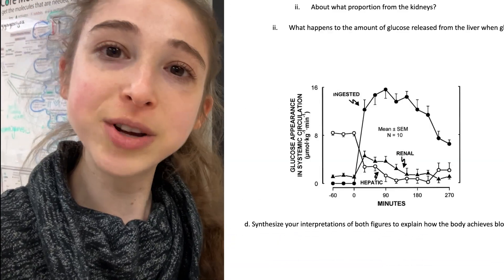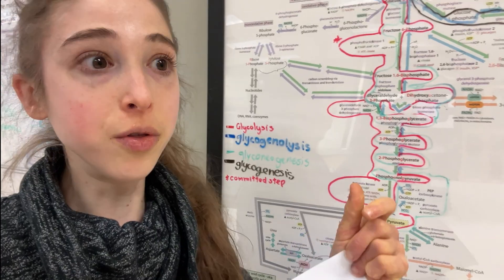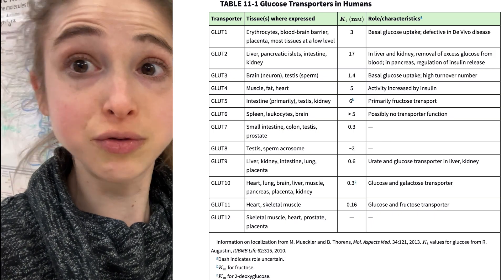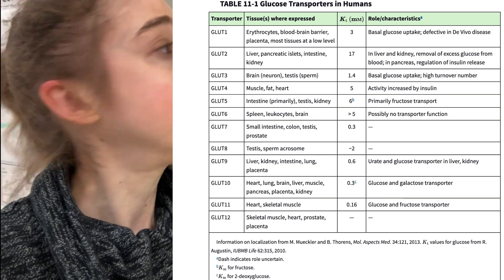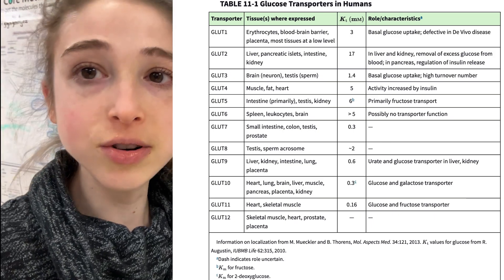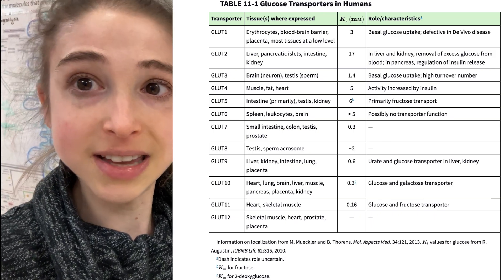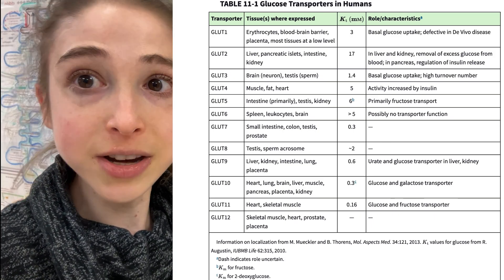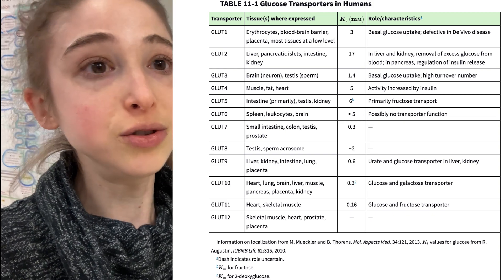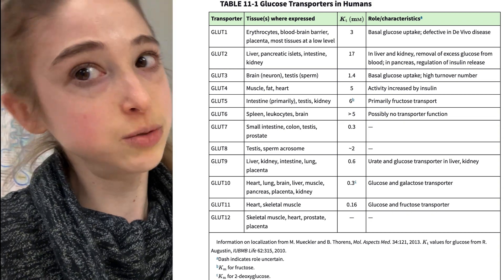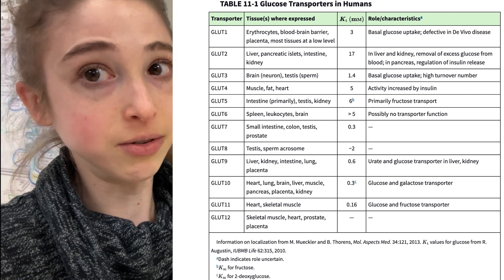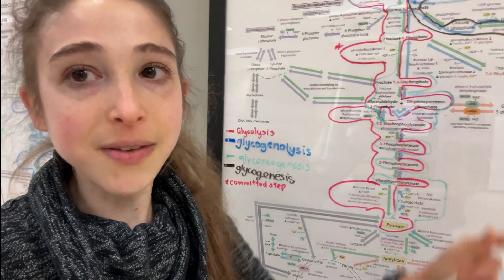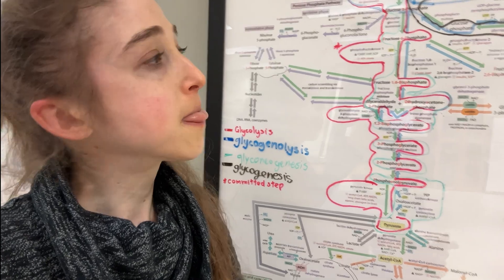Which tissues are going to take up that glucose released from the liver? The ones with high affinity transporters and high affinity hexokinase — because you want your brain to get the glucose when there's not that much around, and your liver is going to be fine with fatty acids and such.